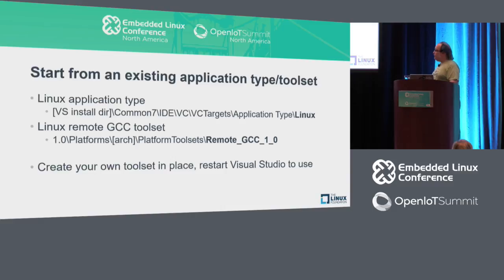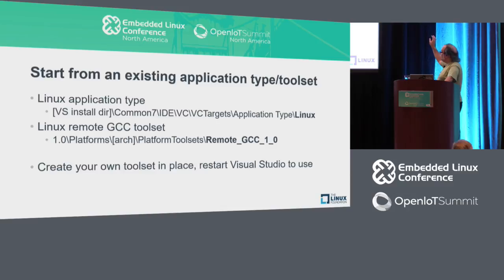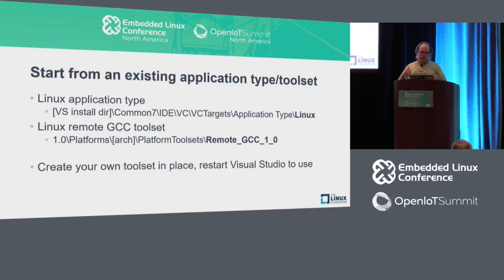The best advice is to start from an existing application type. Start from our Linux application type and navigate down in the Visual Studio install directory under the common path all the way to VC targets, application type, Linux. Within there you'll find the Linux remote GCC toolset. My advice would be to copy what you find there, create your own toolset in place, make the tweaks you want, and then restart Visual Studio to use it.